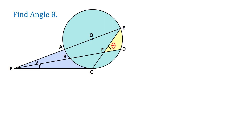We are not given the measures of any angles, and neither do we have the radius or the circumference. From this figure, we need to find angle theta. Notice that this angle is formed by the intersection of two chords CE and BD. Regarding such an angle, we have the following principle.